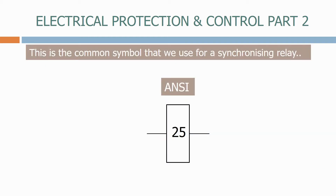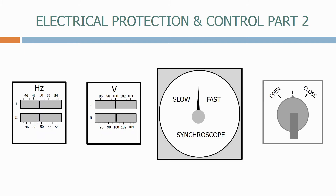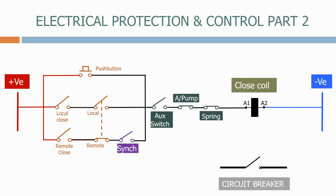When we close circuit breakers we have to ensure that the two systems we are connecting have similar parameters, otherwise the circuit breaker may get damaged. To do this we use synchronising equipment, and in the next section we look in detail at the manual synchronising equipment that we use and how the automatic synchronising equipment gets integrated into the closed circuit.